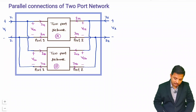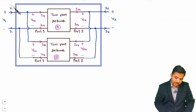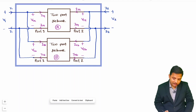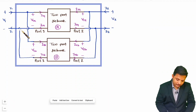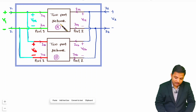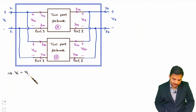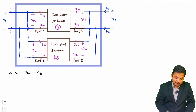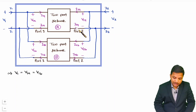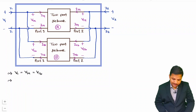Now we will derive the resultant equations for this parallel connection. For parallel connection, the voltage at port 1, V1, equals V1A of network A and also equals V1B of network B — since in parallel, voltage is the same. Similarly, V2 equals V2A and also equals V2B.